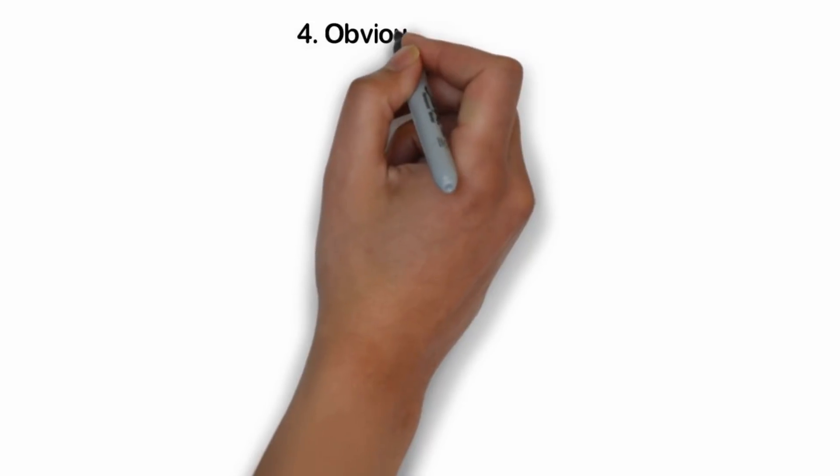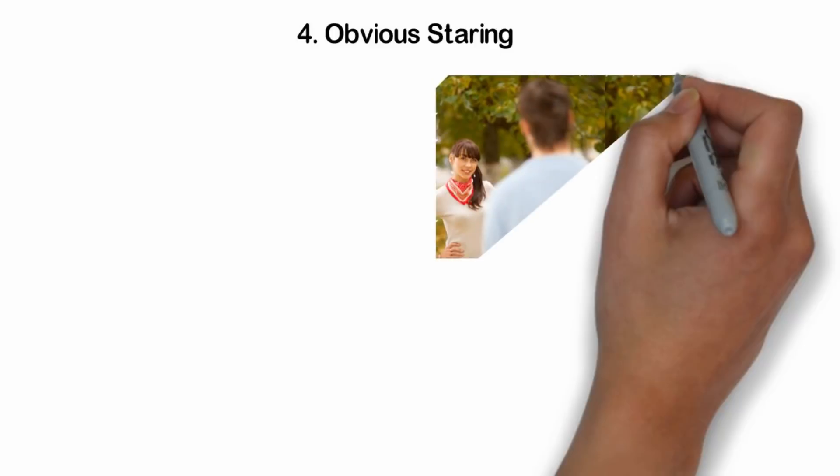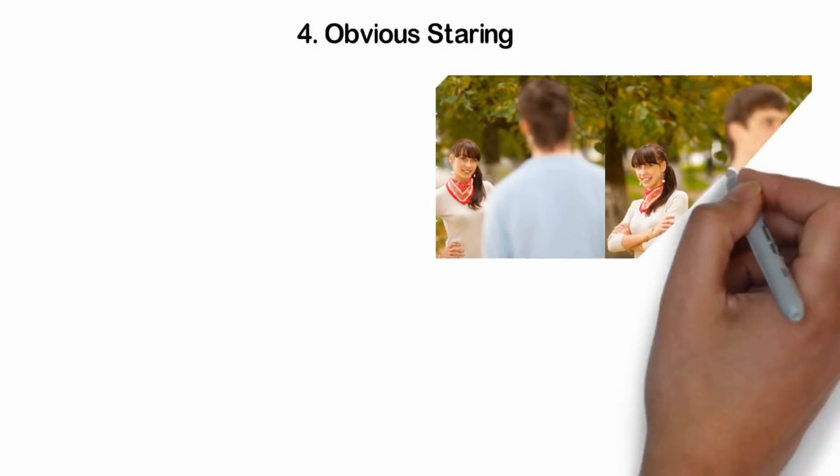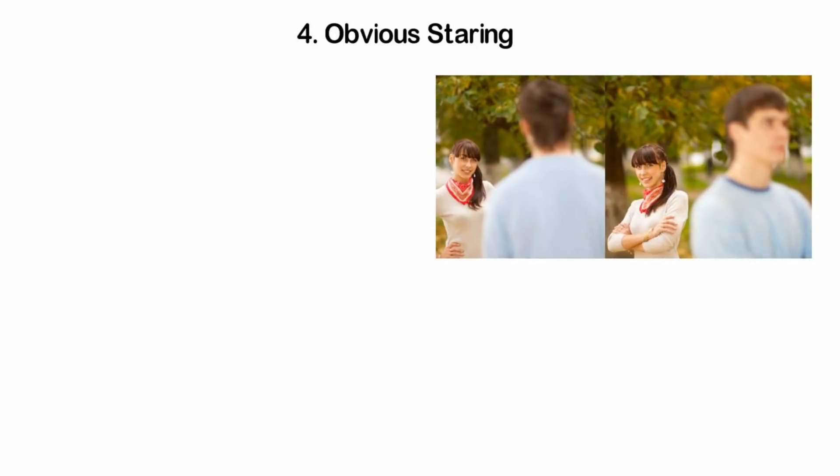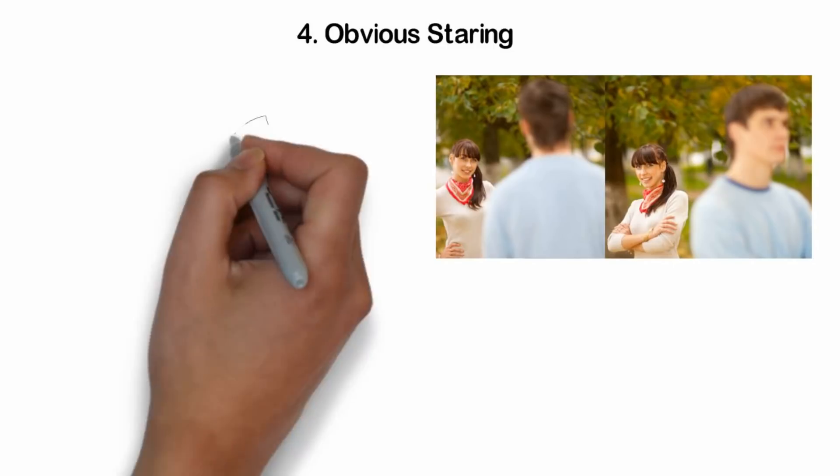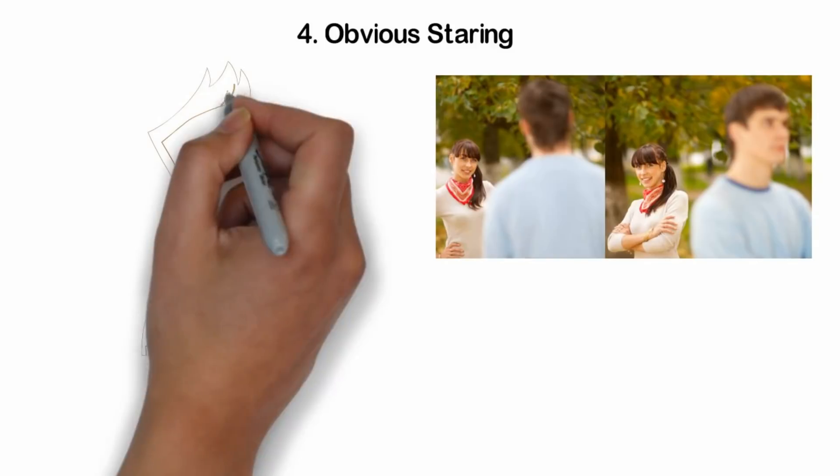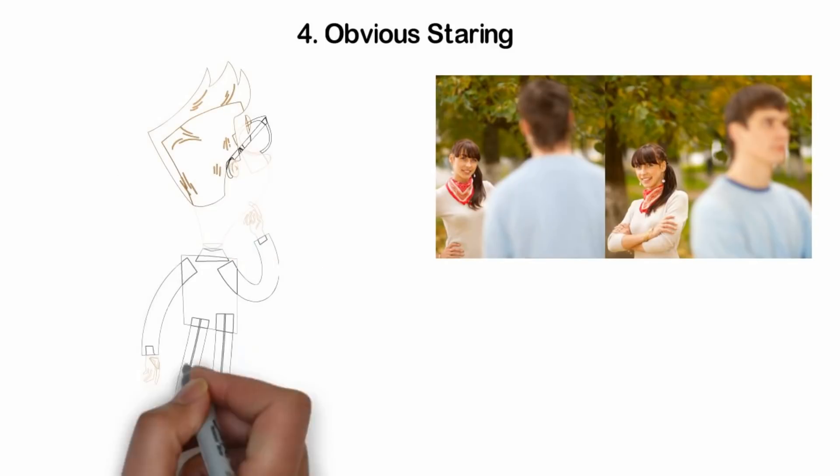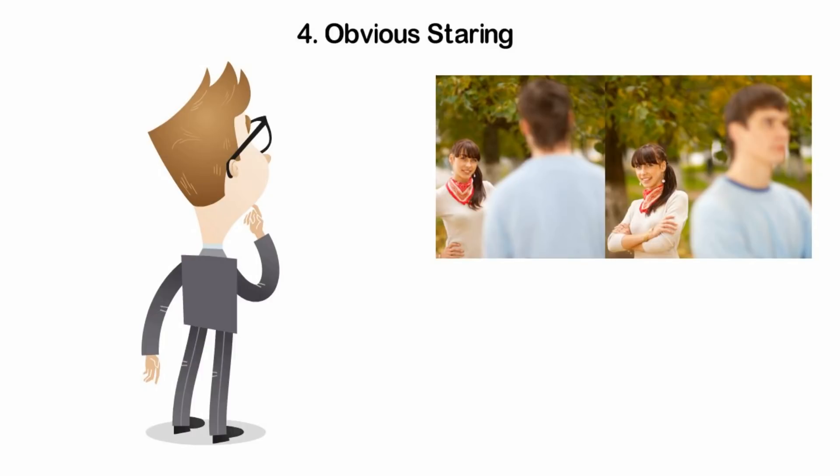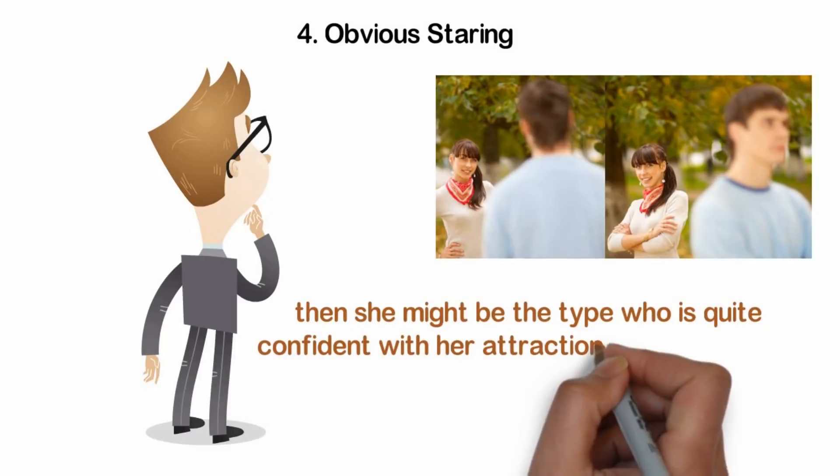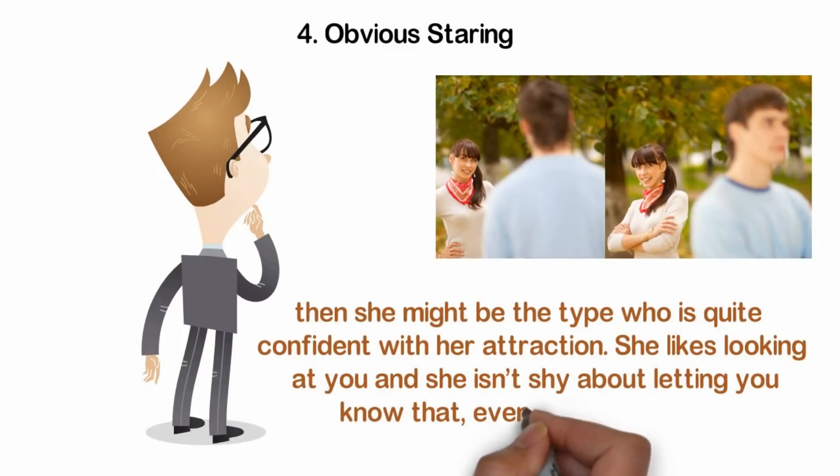Number four, obvious staring. Is this not one of those universal signs? Married, unmarried, whatever, a woman who likes you is quite likely to stare at you. And the moment you catch her staring, her eyes will drift away from you immediately. Now, if this happens every now and then, it could be simple coincidence. Maybe she was just looking around the room or thinking about something and her eyes landed on you. If this happens regularly, then it points more towards a preference in staring at you. If your eyes meet hers and she refuses to look away, then she might be the type who was quite confident with her attraction. She likes looking at you and she isn't shy about letting you know that, even if she is married.